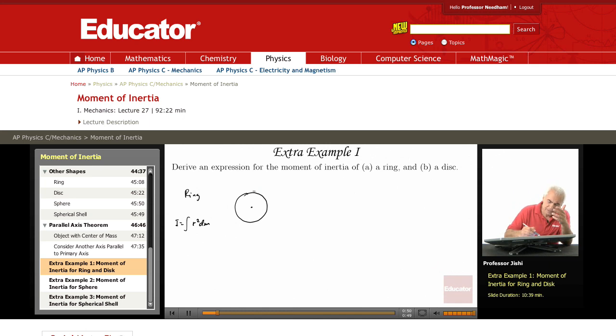So if I pick any dm like here, what is the mass? Suppose the total mass is m and the radius of the ring is r. So what is the mass per unit length lambda? It's the mass divided by the total length which is 2 pi r. That's the mass per unit length.